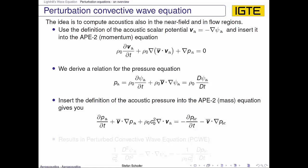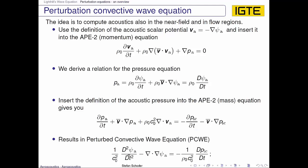We find that the first two terms give us the second material derivative with respect to the scalar potential in terms of the mean convection, which yields the first term of the perturbed convective wave equation. Inserting the definition of the scalar potential into the third term gives a Laplacian term, which is inherently a property of the wave equation. On the inhomogeneous side we then simply have the material derivative of the incompressible pressure.